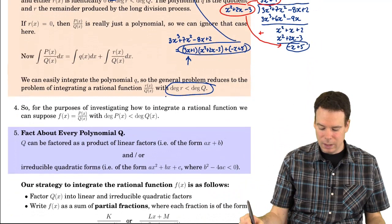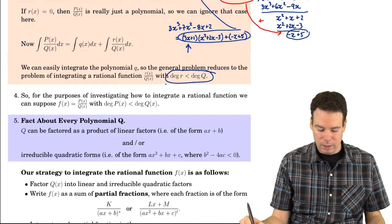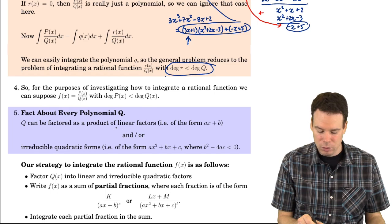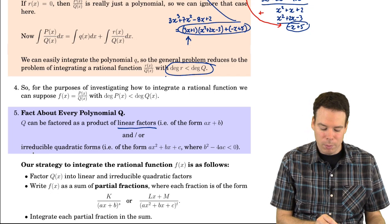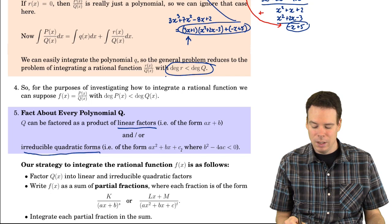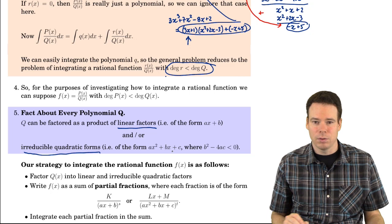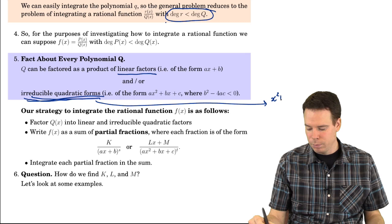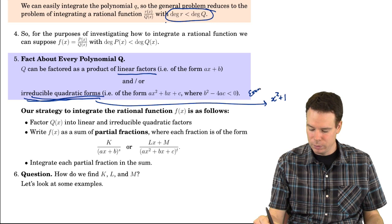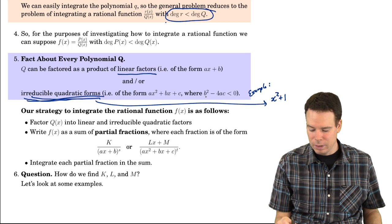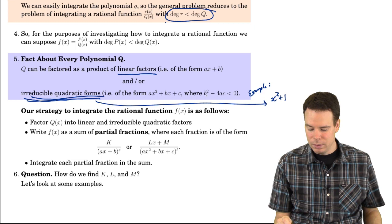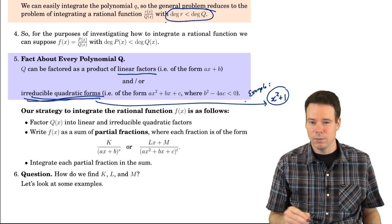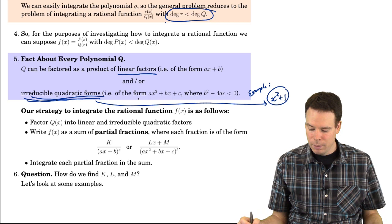A general fact: any polynomial (the denominator) can always be factored into a product of linear factors of the form Ax plus B, and possibly irreducible quadratic factors of the form Ax² plus Bx plus C where the discriminant is negative — meaning no real roots, it doesn't factor over the real numbers. An example of an irreducible quadratic is x² plus 1: its discriminant is 0² minus 4(1)(1) equals negative 4, which is negative, so it doesn't factor.